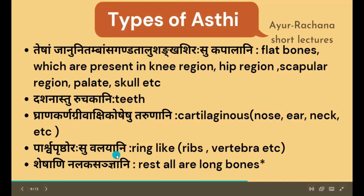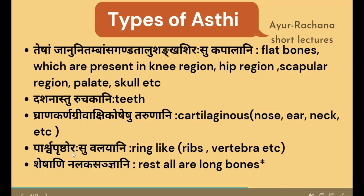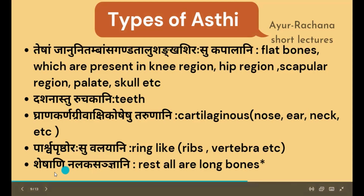Pārshu-prishtavurasu valayani — along the back region, the thoracic cage formed by the ribs and vertebrae are considered to be valayasthi. And sheshani nalakasantyani — whichever long bones exist in the body other than those mentioned are considered as nalakasthi. This concludes the types of asti.